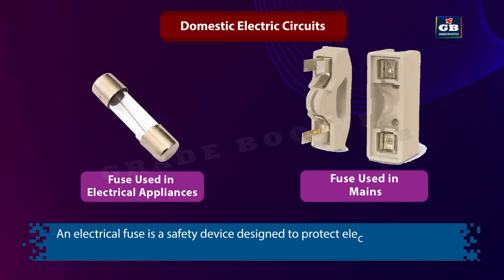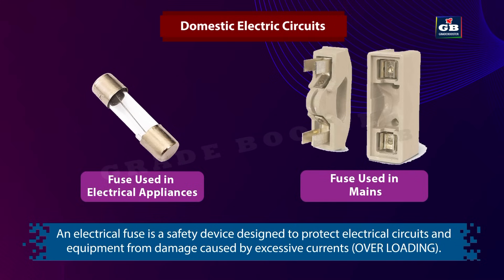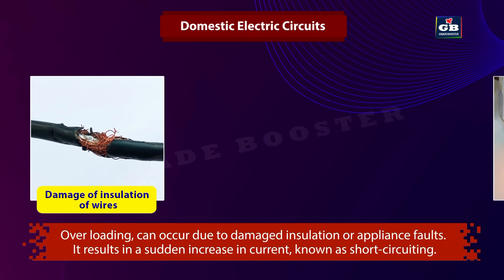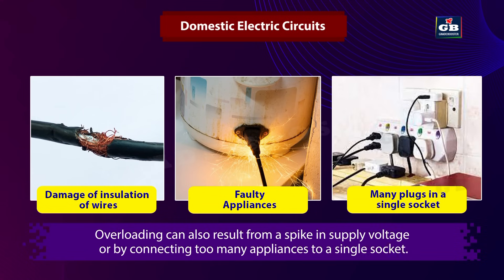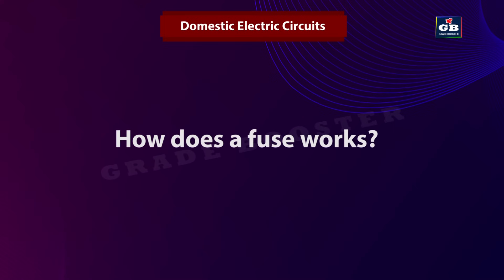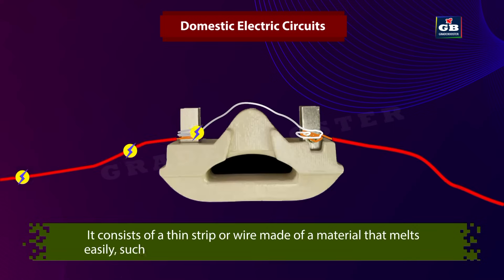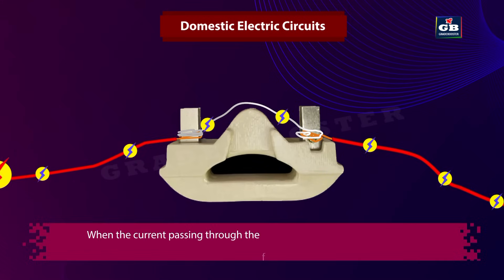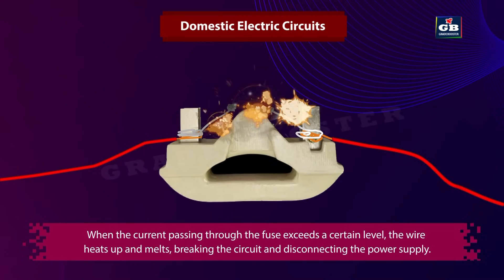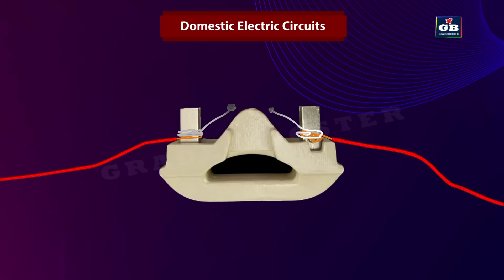An electrical fuse is a safety device designed to protect electrical circuits from damage caused by excessive currents or overloading. Overloading can occur due to damaged insulation, appliance faults, a spike in supply voltage, or by connecting too many appliances to a single socket, resulting in a sudden increase in current known as short-circuiting. A fuse consists of a thin strip or wire of easily melted material such as copper or silver enclosed in a protective casing. When current exceeds a certain level, the wire heats up, melts, breaks the circuit, and disconnects the power supply.